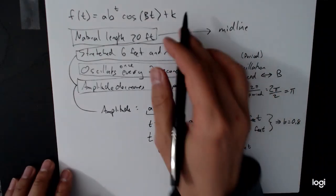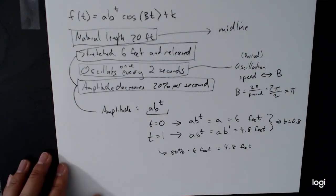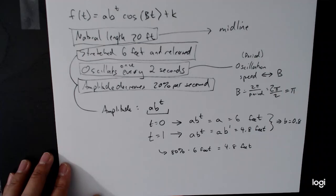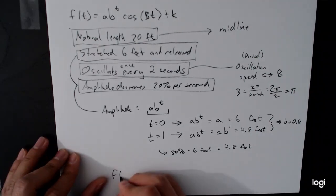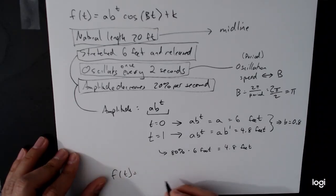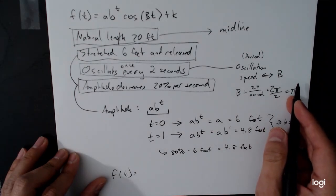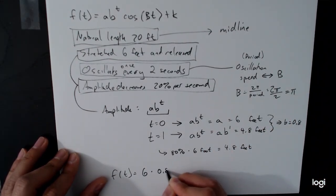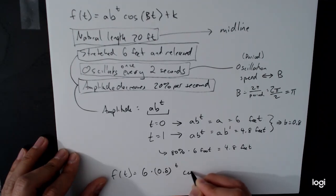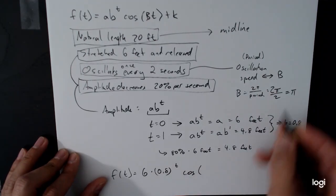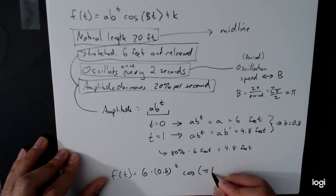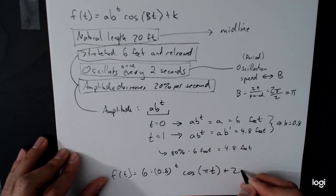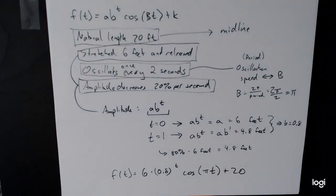The midline, of course, is midline is just the value of 20 up here. And so we can write down our model all together. F of t is equal to our a, which is six times b, which is 0.8 raised to the t power cosine of capital B 0.3 pi t plus 20. And the units here are feet. And so this is our model for this vibration. This is example number four.